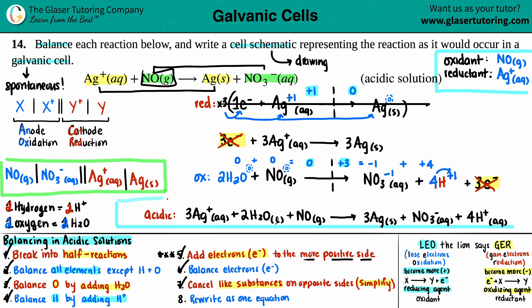So we have three answers: the fully balanced acidic equation, the cell schematic, and the oxidant/reductant identification. Hopefully this helped! Subscribe to the channel if you'd like — we're almost at 30,000 subscribers, and it's all because of you. Keep learning, talk to you soon!